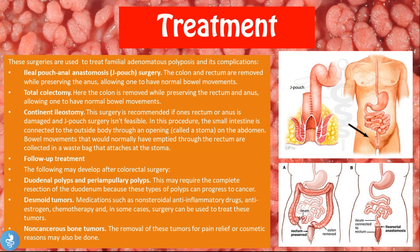Another procedure is the total colectomy, in which the colon is removed while preserving the rectum and anus, allowing normal bowel movements. This involves an ileorectal anastomosis, where the ileum — the last part of the small bowel — is attached directly to the rectum and anus.